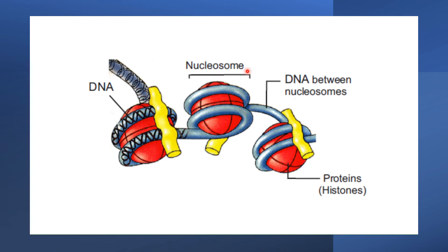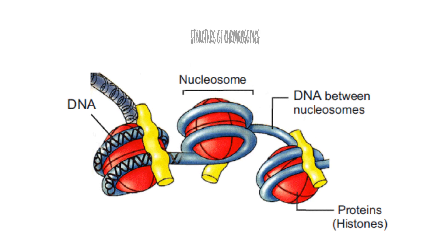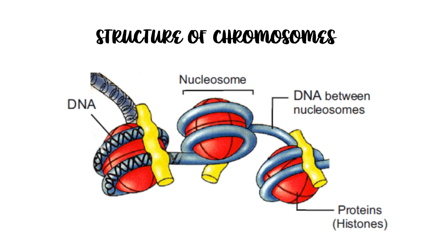DNA is also present between the nucleosomes — you can see the DNA between two nucleosomes. In this way, the nucleosomes and the DNA between them look like beads on a string. These fibers consisting of nucleosomes then condense into compact forms, giving rise to the structure of chromosomes.